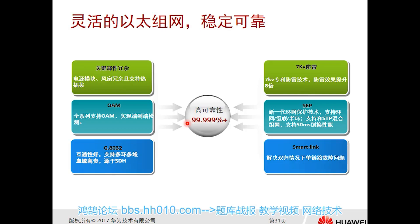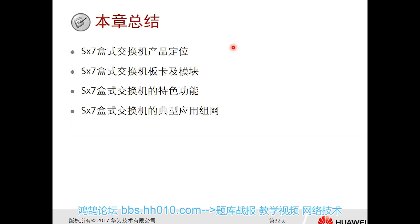It also supports Smart Link, which is mainly used to solve dual-homing single-circuit fault issues. That covers the overall content of this section.